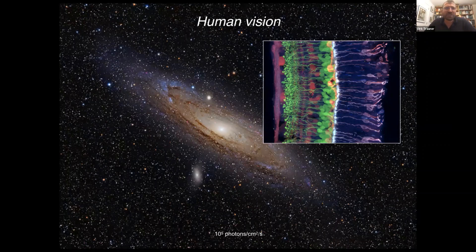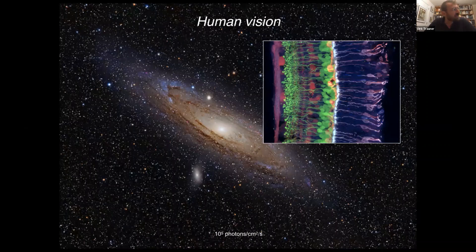This happens at 10 to the 5 photons per square centimeter per second. Just to illustrate this: if you go skiing the next day after you've seen the Andromeda galaxy at night, you have 10 to the 17 photons per square centimeter per second on a glacier, on an ice field, which means that human vision spans a dynamic range of 12 orders of magnitude. There is really nothing else in physiology or biology that does this.